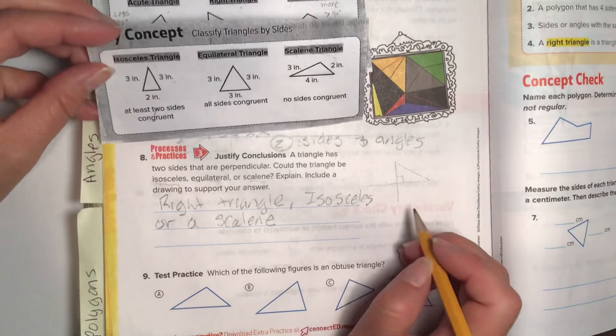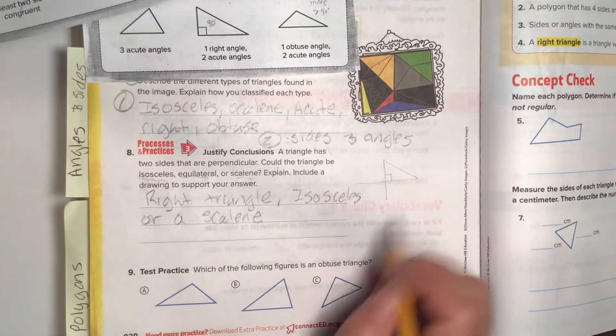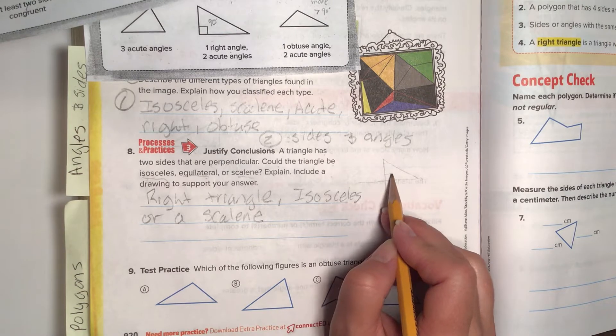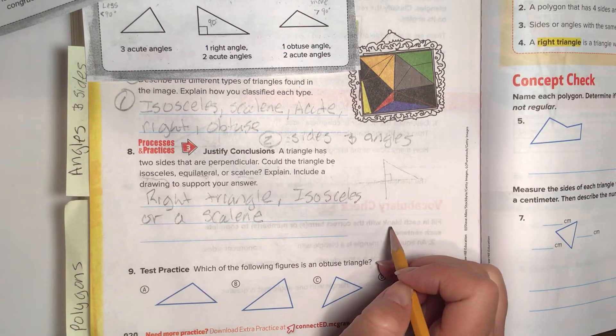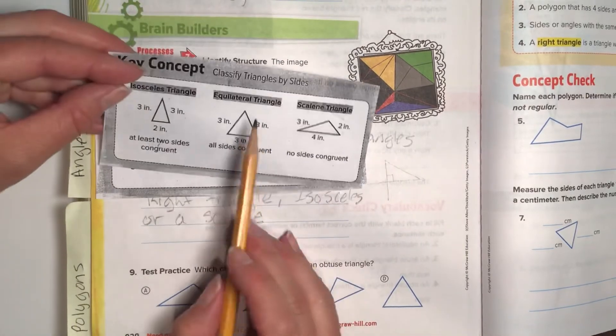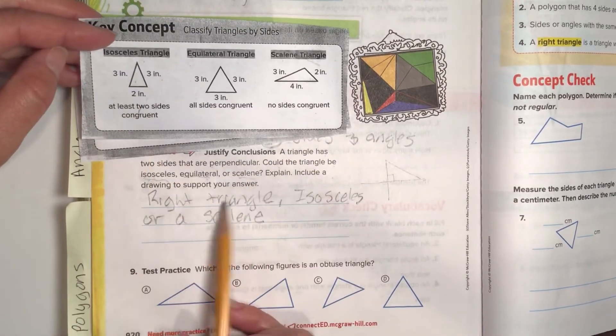It could be a right isosceles or a scalene, but it definitely cannot be an equilateral because the sides aren't perpendicular to do that. Okay. So I'm going to definitely just draw my drawing like that. So just draw a plus sign, draw a line that goes like this with that. And then you can see that will work out for a right triangle. And then it could also be our scalene and an isosceles.